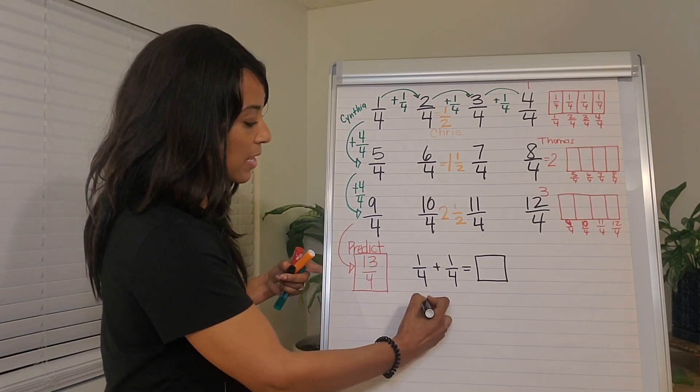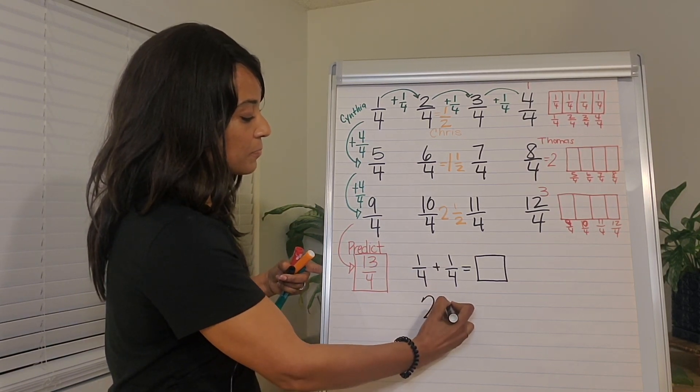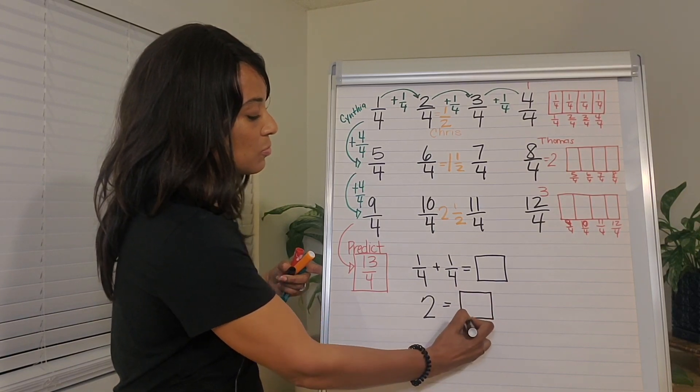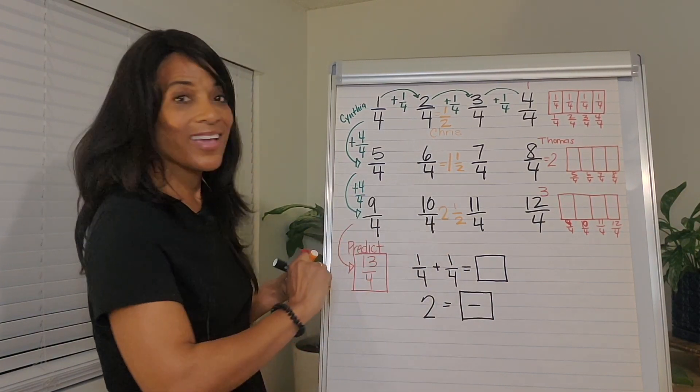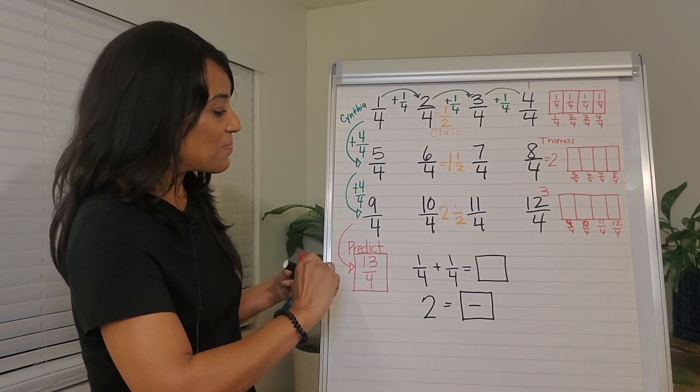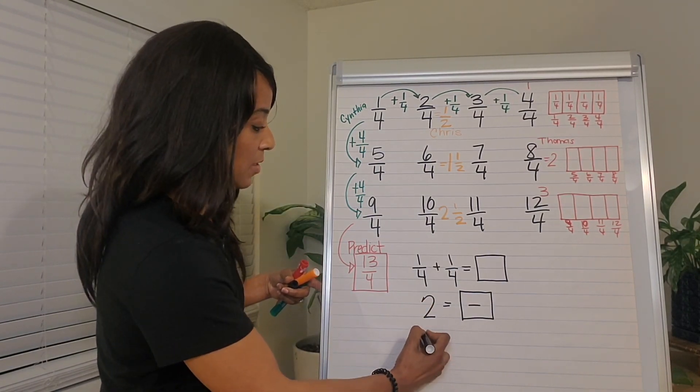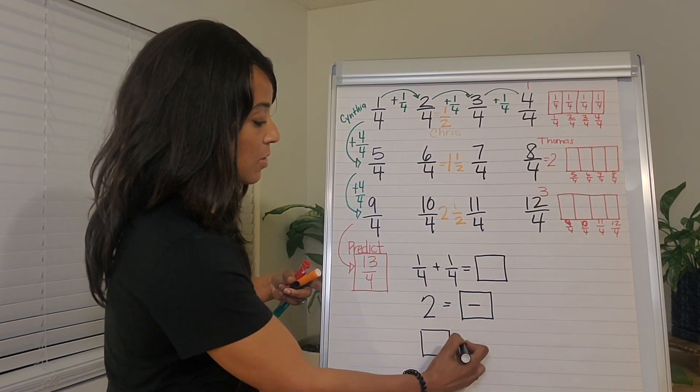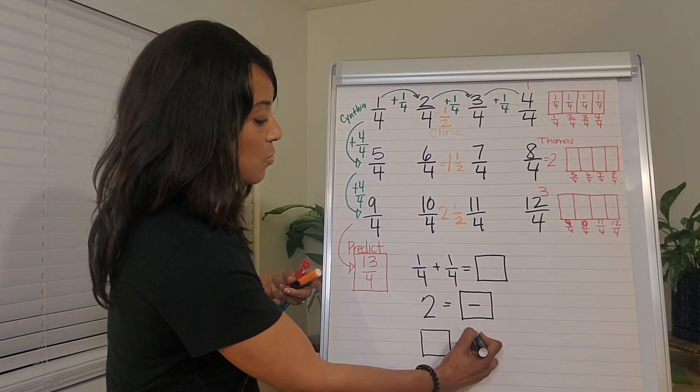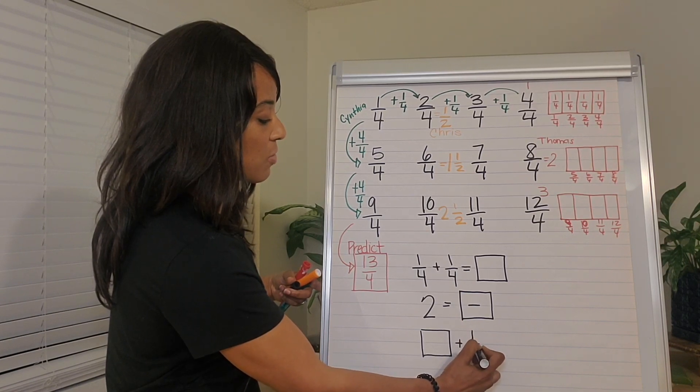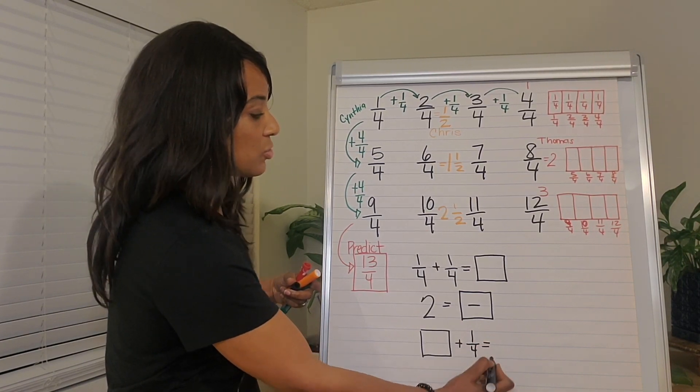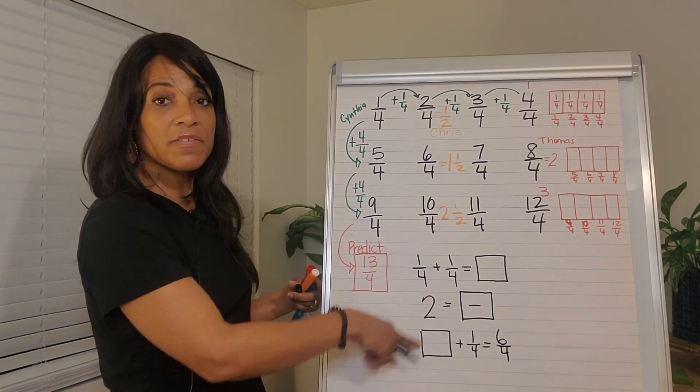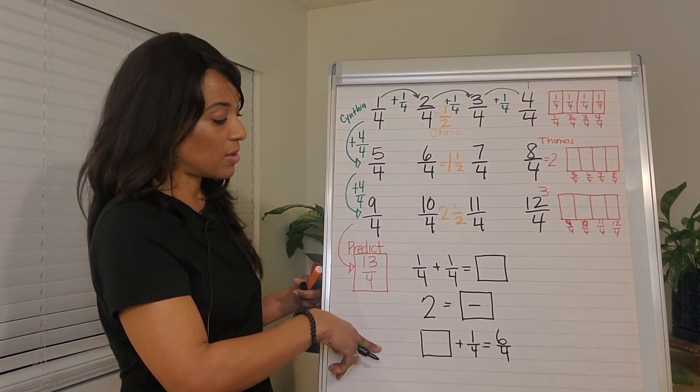I might also do something like two is equal to what fraction. And again, they can use the chart. I might do some unknown, right? Plus one fourth is equal to six fourths. And again, they can answer all of this just by using the chart or the models.